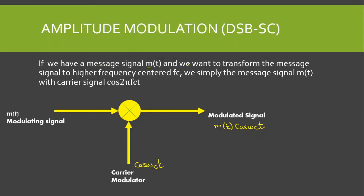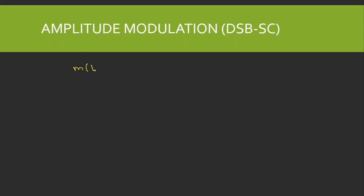If we have a message signal m(t) and want to shift it to a higher frequency centered at fc, we simply multiply the message signal by the carrier signal cos(ωct) or cos(2πfct). The message signal is also called the modulating signal or baseband signal. When multiplied by the higher frequency carrier cos(ωct), we obtain the modulated signal s(t) = m(t)·cos(ωct).